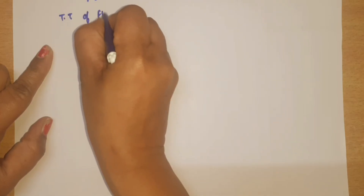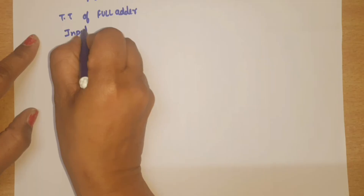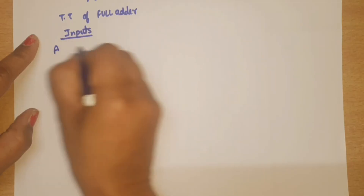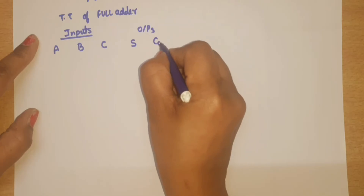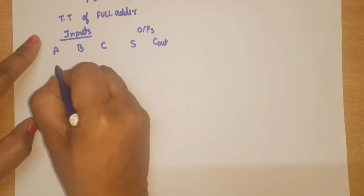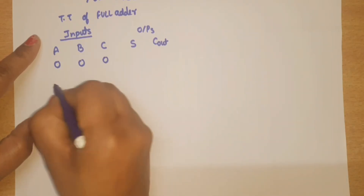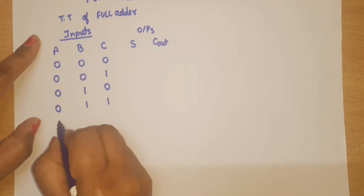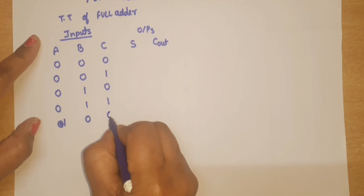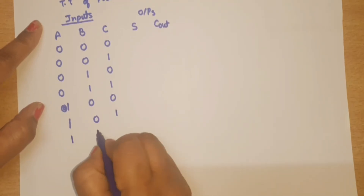The truth table of the full adder — how many inputs are required? For a full adder we add three bits, so inputs will be A, B, C, and two outputs: Sum and Carry Out (C_out). Three inputs means how many combinations? Two raised to power three — eight combinations: 000, 001, 010, 011, 100, 101, 110, 111.